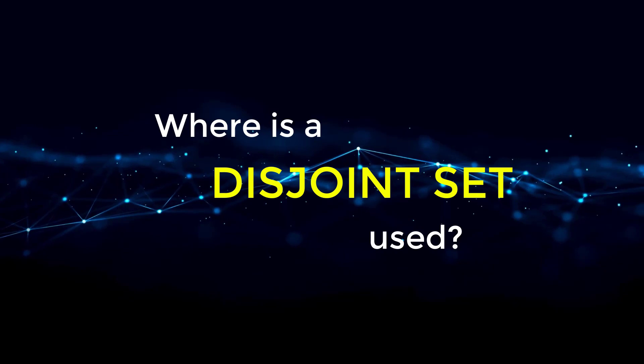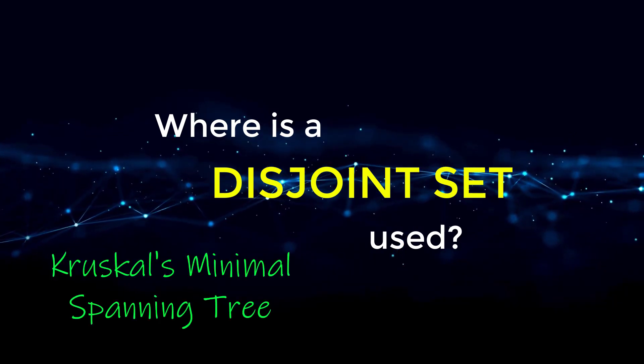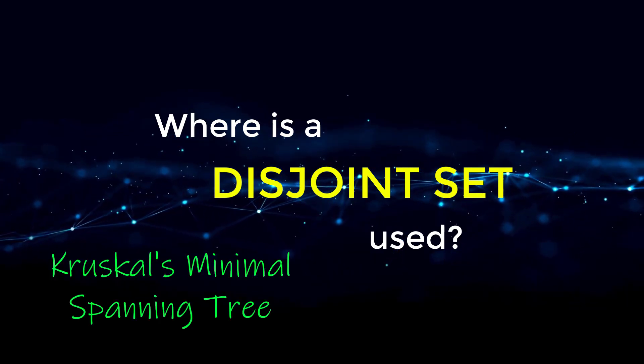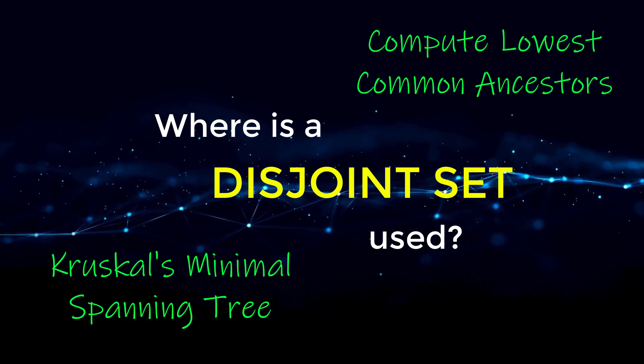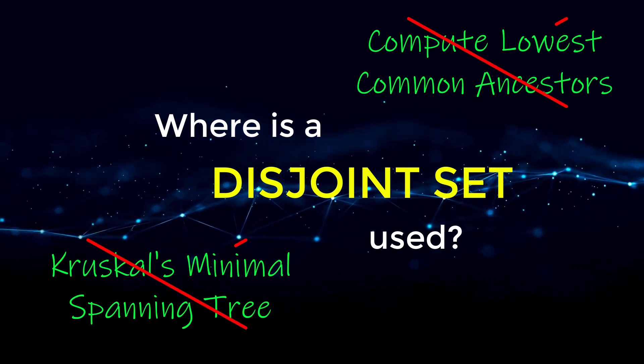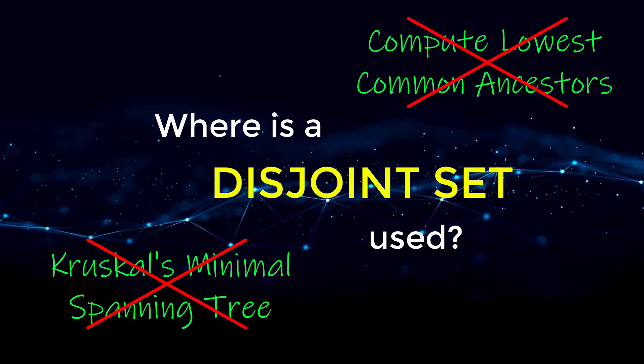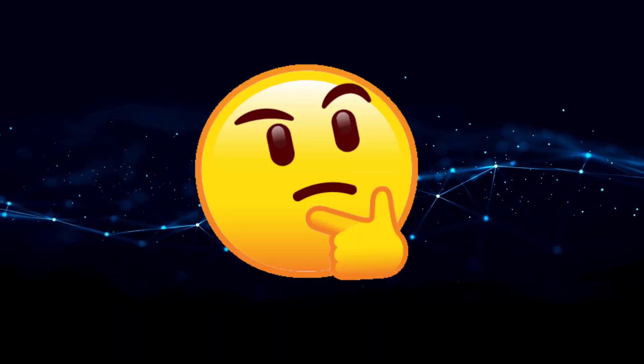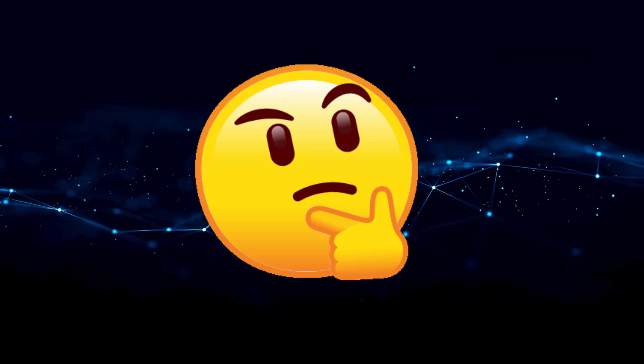So where is this data structure typically used? The first place is in Kruskal's minimal spanning tree. And the second is to compute least common ancestors. On your day-to-day, you're probably not going to have to know Kruskal's minimal spanning tree or computing least common ancestors. So what is the best use of this data structure?